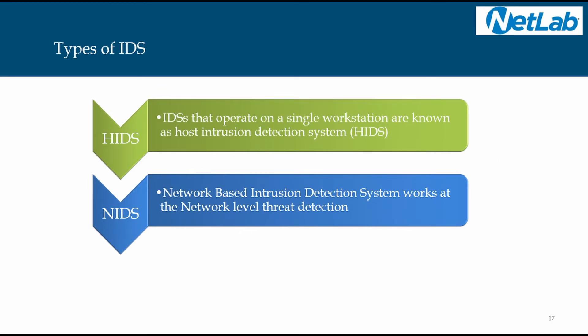There are two types of IDS: HIDS and NIDS. HIDS is the host-based intrusion detection system that operates on a single workstation. NIDS is network-level intrusion detection. HIDS and NIDS are two different categorizations of IDS.